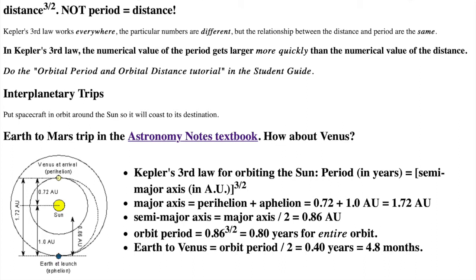But the relationship between distance and period would still be the same: period squared and distance cubed. Kepler's third law works everywhere. The particular numbers are different, but the relationship between the distance and the period are the same.